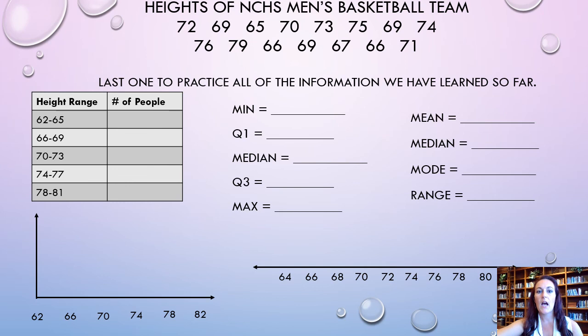Okay. And then the next one that you're going to submit is heights of the men's basketball team at Northwest Cabarrus High School. Okay. So, I already have the ranges set up for the histograms. All you have to do is go count. Okay. Find the minimum, quartile one, median, Q3, and max for the box and whisker plots, and then you draw both graphs. And then you find the mean, median, mode, and range. Okay. So, after you submit those two questions, that's all we're going to have to do for today, for Monday. And then tomorrow, we're going to start analyzing data a little bit more. All right.